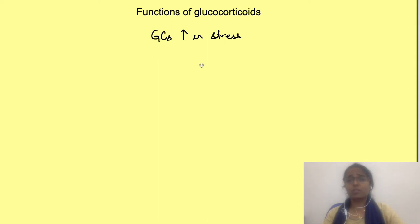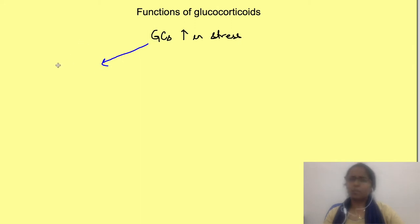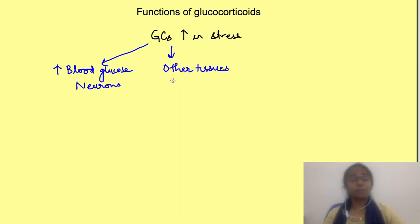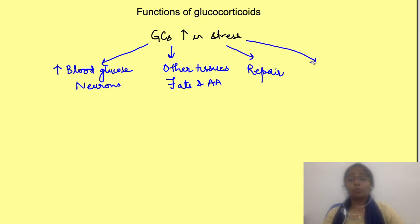Suppose when an animal is injured, which is obviously a state of stress, what are the things which should happen in the body? Since during this time the animal will not be in a state to search or hunt for its food, its blood glucose levels should be maintained. Especially for the neurons, since other tissues can even use fats and amino acids as fuel. Secondly, it should help in repair of the injured area. Also with injury there will be inflammation, so it should keep the immune system in check so that it does not overdo its job and spoil everything.